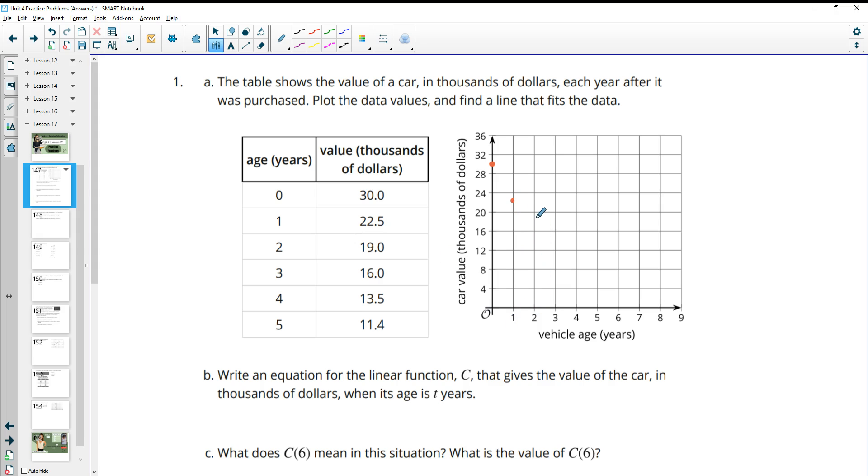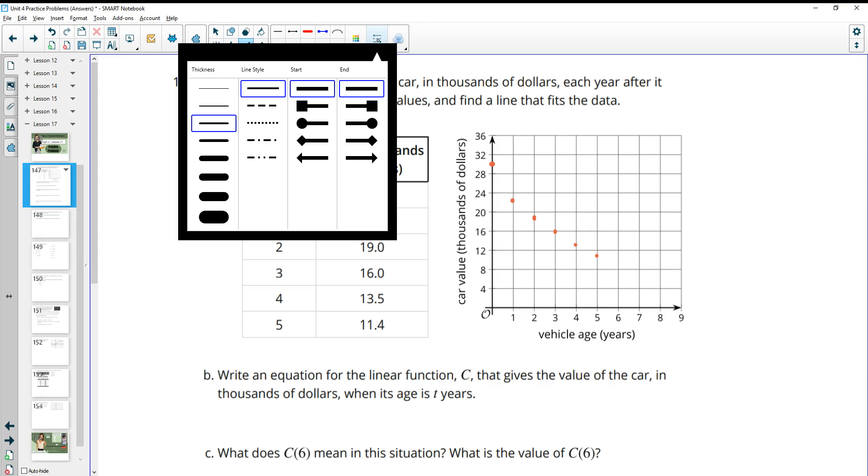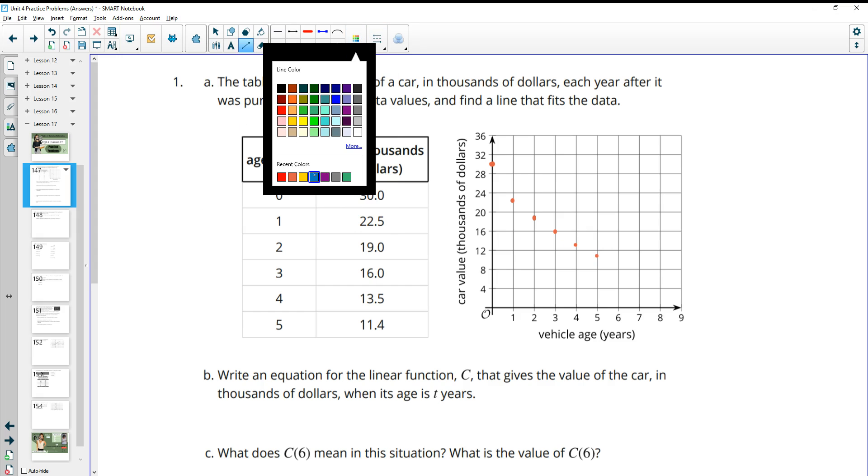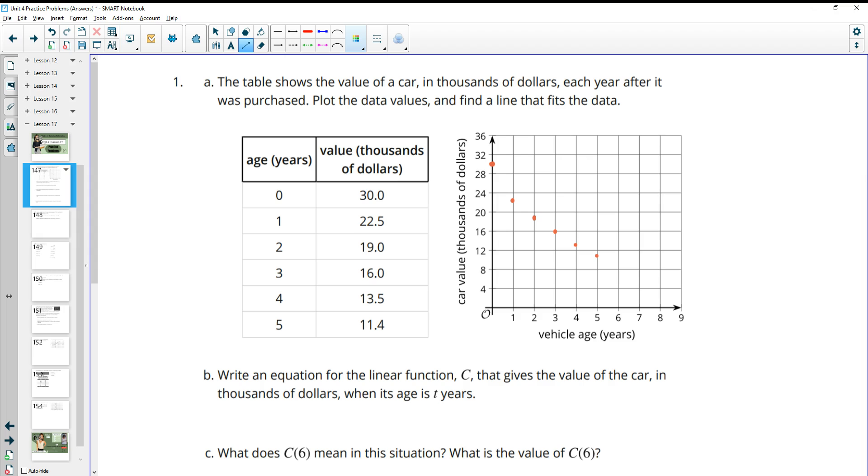2 is at 19. 3 is at 16. 4 is at 13.5. And then 5 is at 11.4. And then we're supposed to draw a line in here that represents this data or fits this data. Now this is going to be different for you depending on what line you decide fits the data. So I'm going to draw this line.